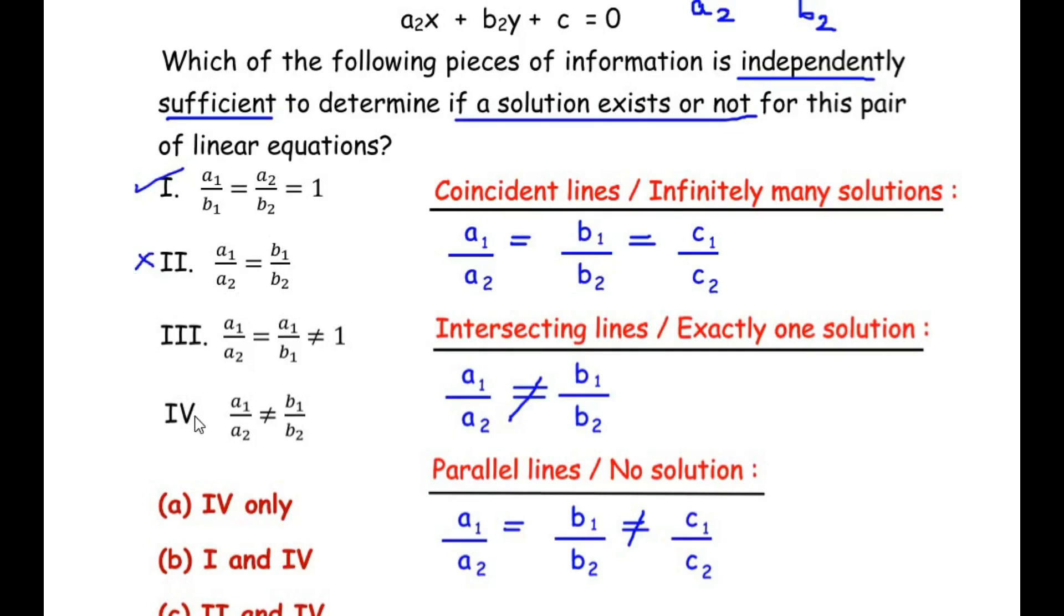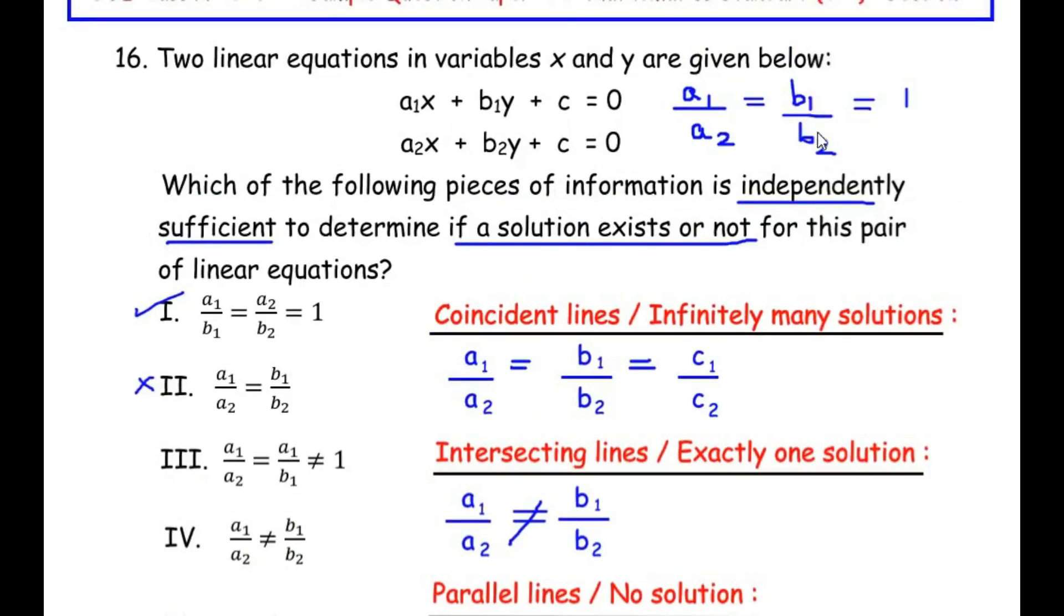Now let us look at the third option. It is a₁/a₂ is equal to a₁/b₁, but here we have got b₁/b₂, so the third option is clearly a wrong one.